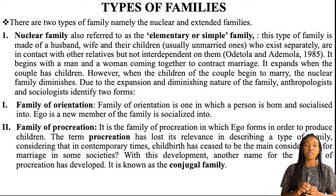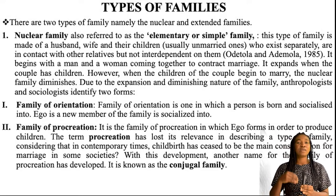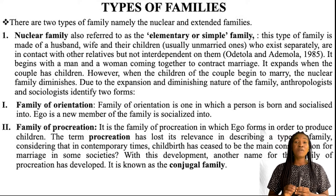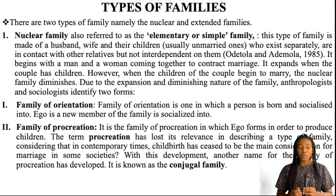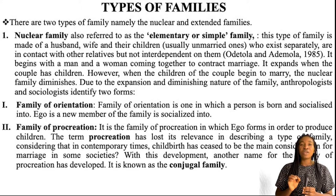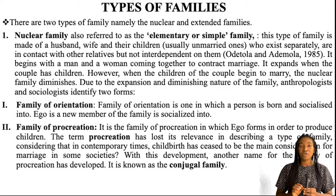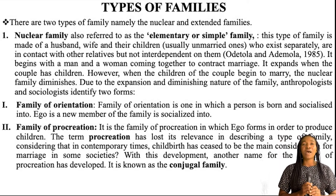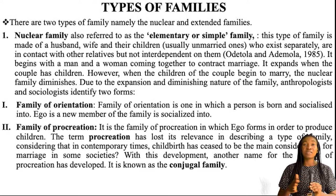Let's look at the nuclear family first. Some scholars have referred to the nuclear family as the elementary or simple family. The nuclear family refers to the type of family which consists of the husband, the wife, and then the children — and these people live together under the same roof. The children are taken care of by the husband and the wife, who are the parents. So the nuclear family basically consists of the husband, the wife, and the children who live together in the same household.